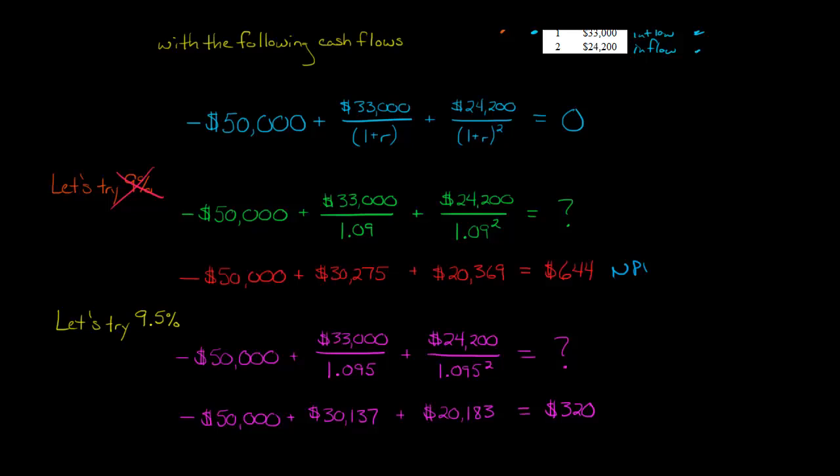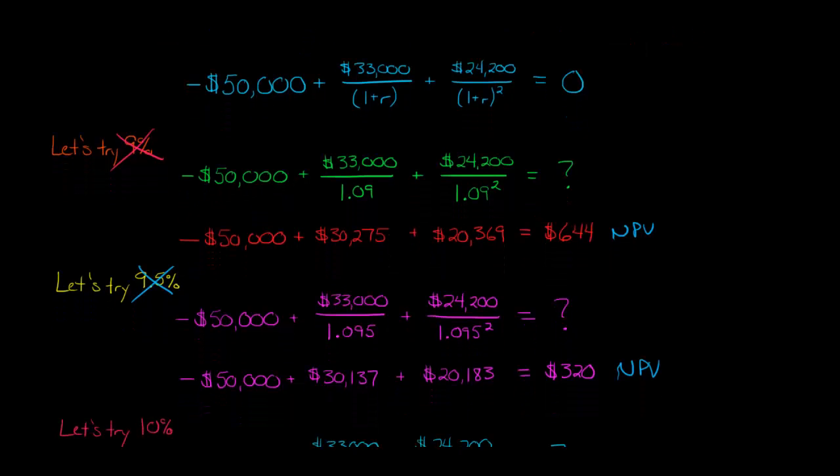So here we had an NPV of 644 when we tried 9%. And then we went up to 9.5% and got an NPV that is still not zero. This is obviously not zero, but it's closer to zero. We went from 644 to 320. So by going up from 9 to 9.5, we got closer to zero. So even though 9.5 is not correct, it's not the IRR, we're going in the right direction. So let's keep going up.